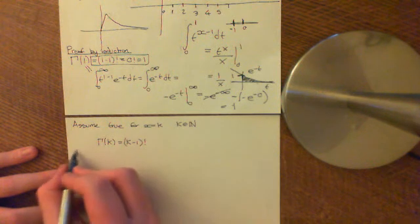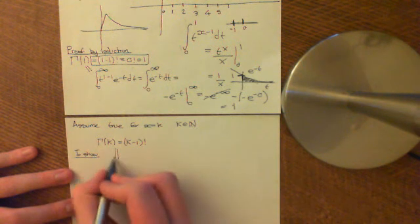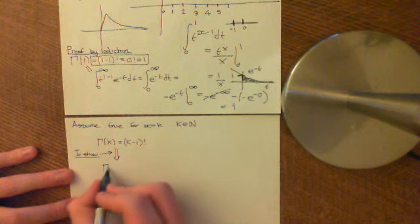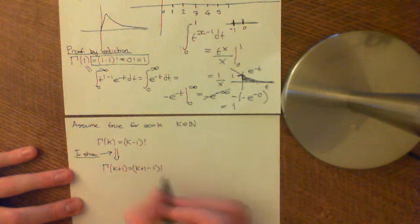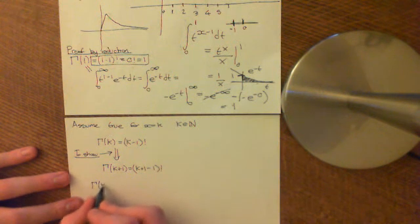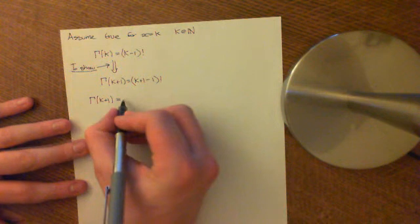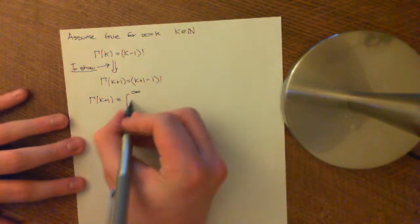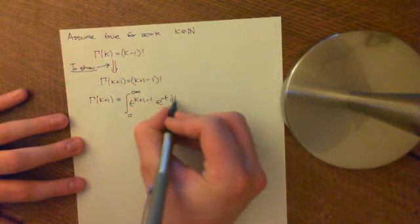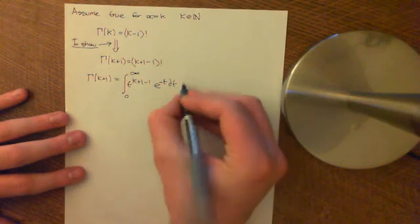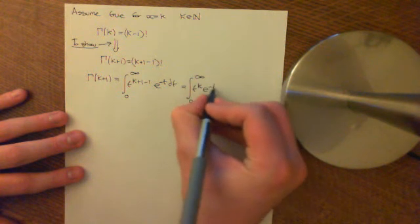Now what we want to show — the inductive step — is that this implies gamma of k plus one equals k plus one minus one factorial, i.e. k factorial. By definition, gamma of k plus one equals the integral from zero to infinity of t to the power of k plus one minus one, e to the negative t dt — which simplifies to the integral from zero to infinity of t to the k, e to the negative t dt.